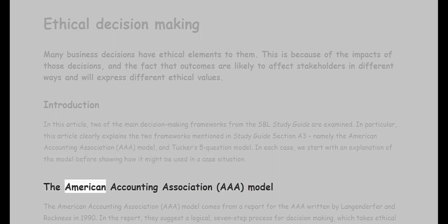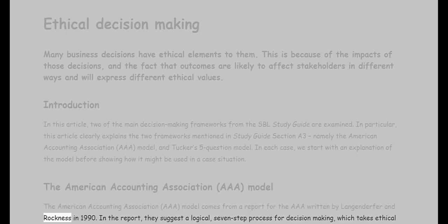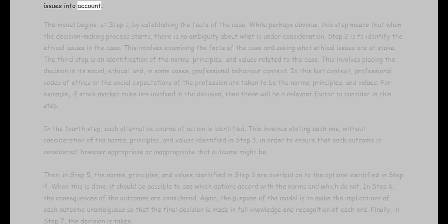The American Accounting Association (AAA) model comes from a report written by Langenderfer and Rockness in 1990. In the report, they suggest a logical, seven-step process for decision-making which takes ethical issues into account.